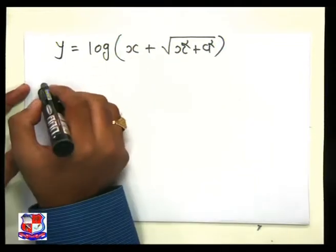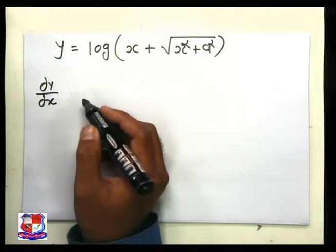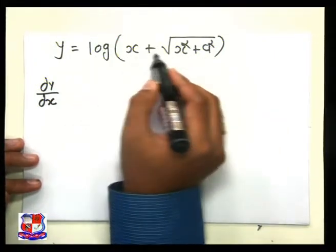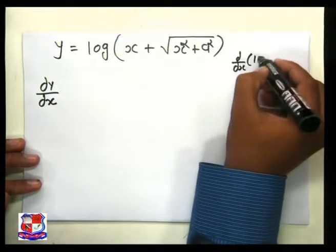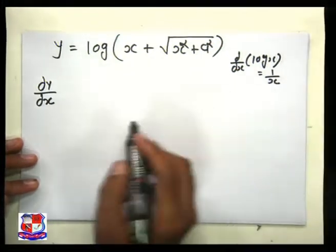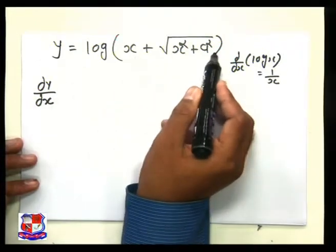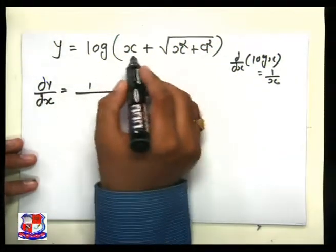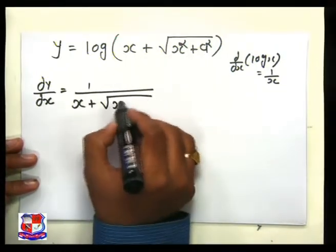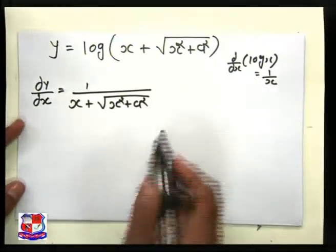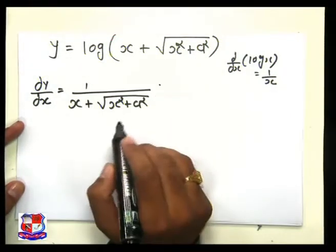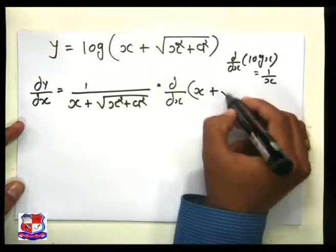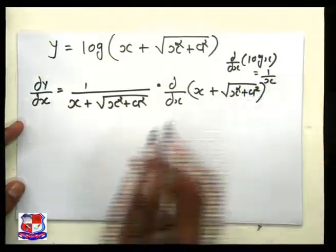We want to find dy/dx. Taking the whole inner term as x, the differentiation of log x is 1 upon x. So we write 1 upon (x + √(x² + a²)), and multiply by d/dx of the remaining value (x + √(x² + a²)).